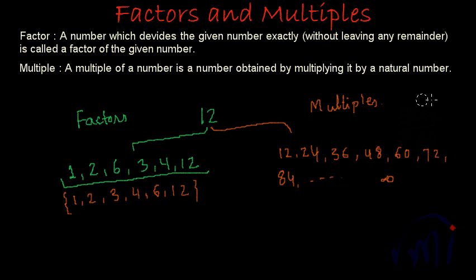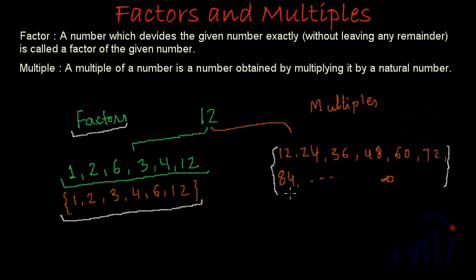So what have we learnt? We have learnt about factors and multiples. One very important thing to notice: all the factors of 12 are smaller than or equal to 12. And if you see all the multiples, these multiples are greater than or equal to 12. So all factors are either less than or equal to the number, and all multiples are either greater than or equal to the number.